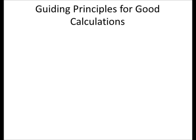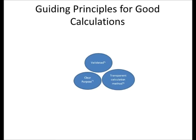There are some guiding principles that you should always find in calculations. The first is that it should be immediately obvious the purpose of the calculation. You should say in a calculation why you know the answer is correct, so we need some kind of validation. And the third thing is that the calculation method needs to be transparent.